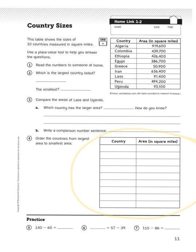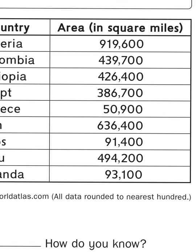Number two asks you: which is the largest country listed? We have to consult the table. You'll notice that some of the countries have numbers in the hundreds of thousands and some are in the tens of thousands. If I just look at the column to the far left, we can exclude several countries because they are only in the tens of thousands. We need to look at which country has the largest digit in the hundred thousands place value.